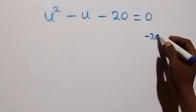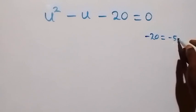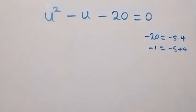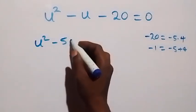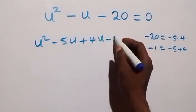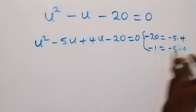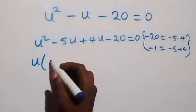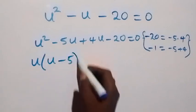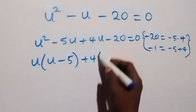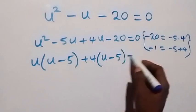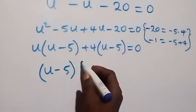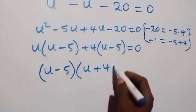Minus 20, which is the product, can be written as minus 5 times 4. And the sum, which is minus 1, can be written as minus 5 plus 4. So it implies u squared minus 5u plus 4u minus 20 equals 0. Grouping and factoring what is common: u is common between the first two terms, leaving u minus 5. Then 4 is common in the last two terms, leaving u minus 5. So we get (u minus 5)(u plus 4) equals 0.